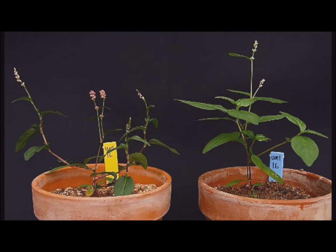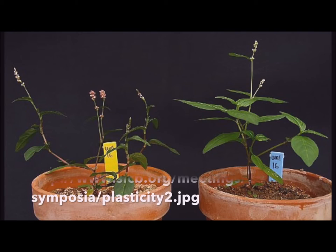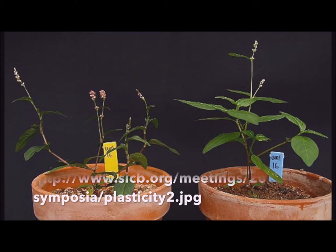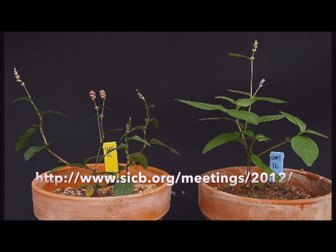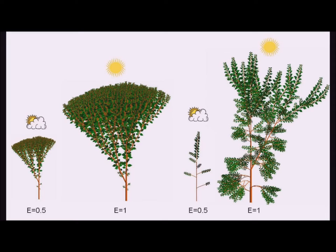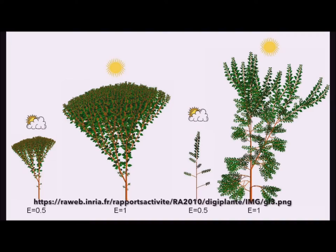Developmental plasticity refers to changes that are irreversible. For example, when an adult plant develops, the patterns of biomass allocation — like the proportion of leaf, stem, and root — will remain largely unchanged, regardless of any changes in the light environment.